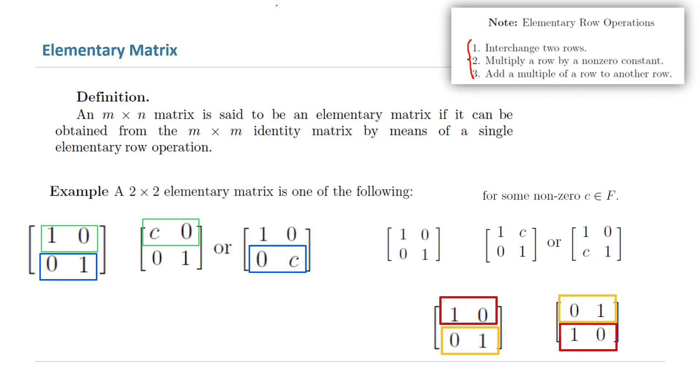So on the exam, if I ask you to list all possible two by two elementary matrices, you have one, two, three, four, and five options.